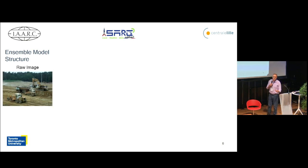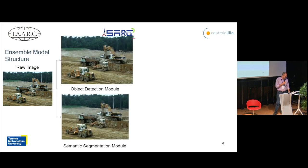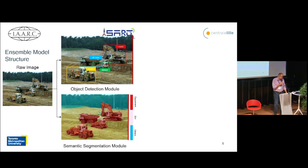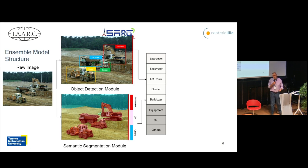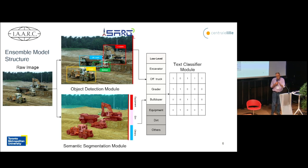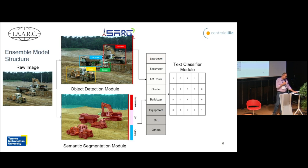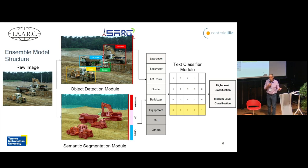We thought about creating an ensemble model, meaning assembling a number of methods together to tackle this problem. Assuming we have an image, we run an object detector and a semantic segmentation, which gives us the objects and the surfaces or materials that exist in the image. We call them low-level labels. The aim is that we create an additional classifier which can turn each of these objects into a binary value, and we can train any models including neural networks or random forest. Hopefully it can give us high-level and medium-level classification.